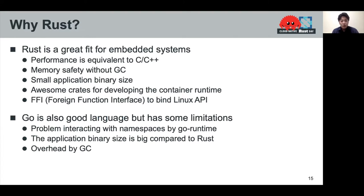Why did we choose Rust over Golang or C/C++ to develop the container runtime? The answer is that Rust is a great fit for embedded systems. First, the performance is equivalent to C/C++. Second, Rust guarantees memory safety without garbage collection. Third, the Rust community has an awesome set of crates for developing container runtimes. Lastly, Rust FFI — Foreign Function Interface — is very helpful to bind Linux APIs. Golang, adopted by many existing container runtimes, is also good, but has some limitations in embedded systems. Go has a problem interacting with namespaces via the Go runtime. In addition, the application binary size is large compared to Rust, and Go-based runtimes include performance overhead from garbage collection.